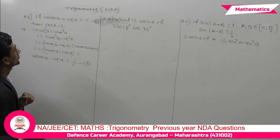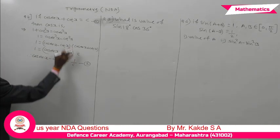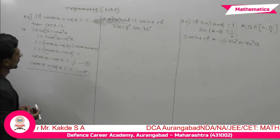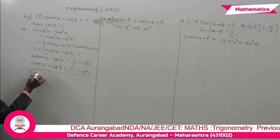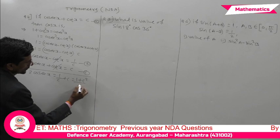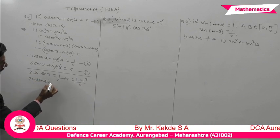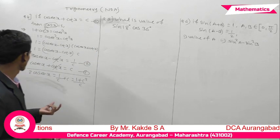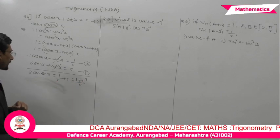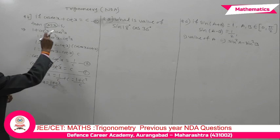Now solve equations 1 and 2 simultaneously. Adding both equations: cotx terms cancel, giving 2cosecx = c + 1/c. Cross-multiplying: 2cosecx = (c² + 1)/c, so cosecx = (1 + c²)/(2c), meaning sinx = 2c/(1 + c²). We need cosx, so we'll use the Pythagorean identity.